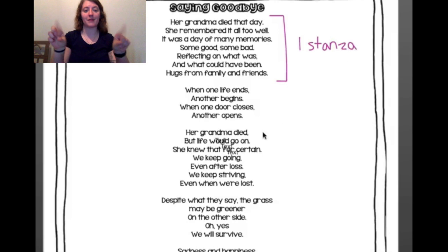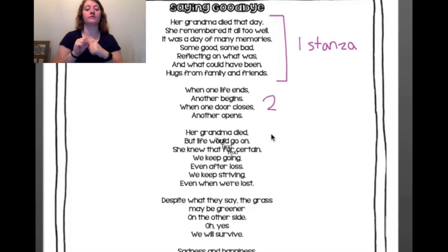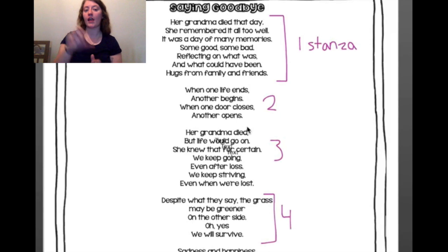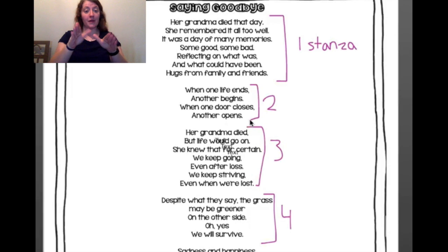As you can see, this poem has multiple stanzas. There's one stanza, two stanzas, three stanzas, four stanzas, and so on. Each of these stanzas has multiple lines, and it is separated by a space. So just think of a stanza like a paragraph.